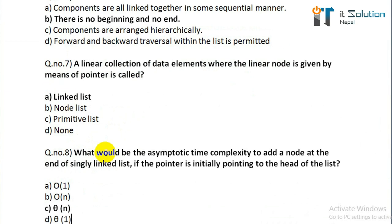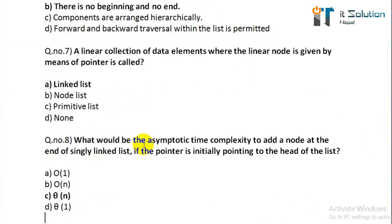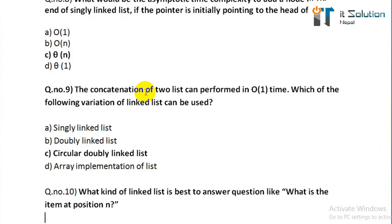Question number eight: what would be the asymptotic time complexity to add a node at the end of a singly linked list if the pointer is initially pointing to the head of the list? Its correct answer is option C. Question number nine: the concatenation of two lists can be performed in O(1) time — which variation of linked list can be used? Its correct answer is circular doubly linked list.